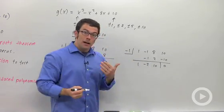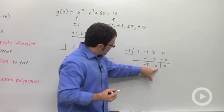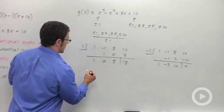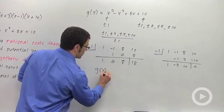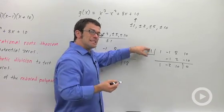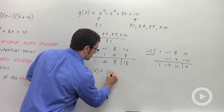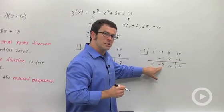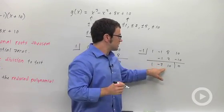And that means that x minus negative 1 is a factor. And by the way, these are the coefficients of the other factor. So this function can be written g of x equals, and one factor is x minus negative 1, x plus 1. The other factor is x squared minus 2x plus 10. This is the reduced polynomial.